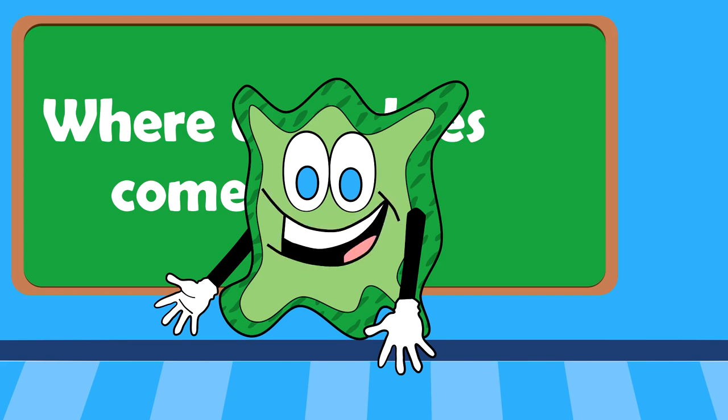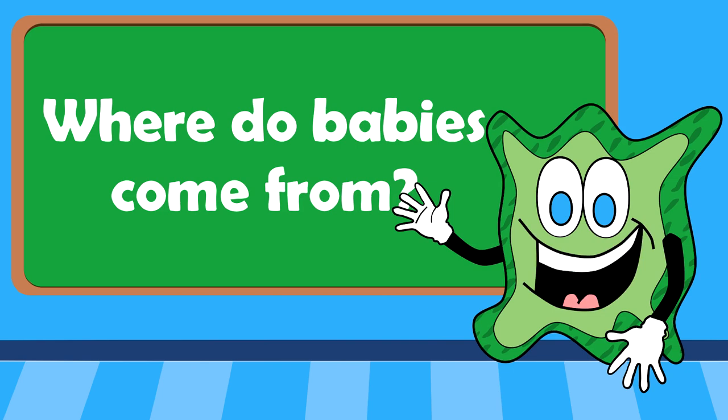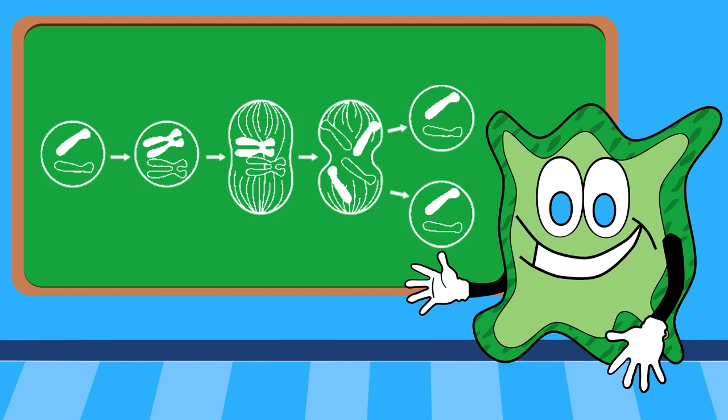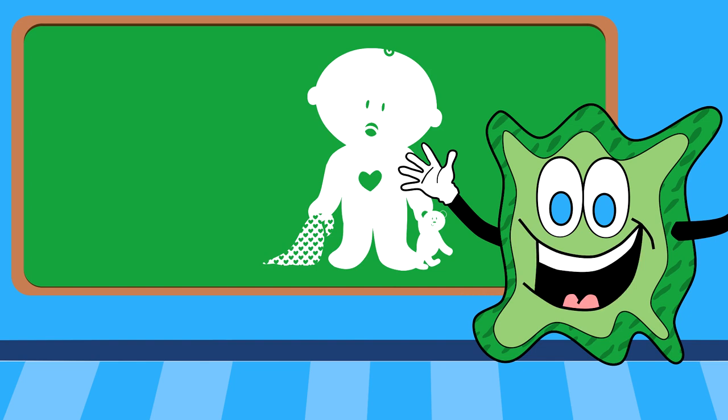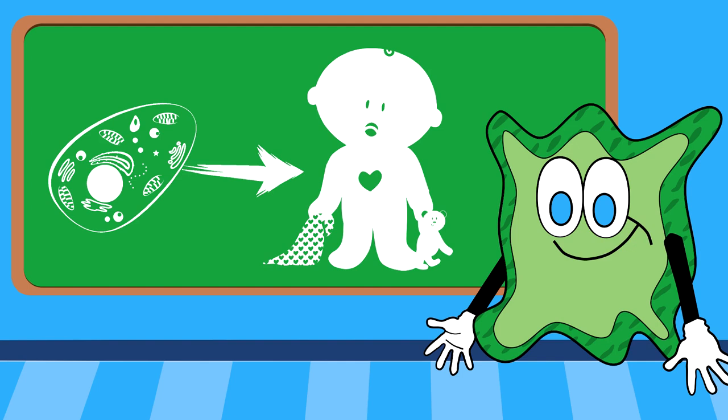At some point, we've all asked, where do babies come from? Your parents may have sat you down to have a little talk about the birds and the bees, and your schoolteachers might have explained the concepts of cell division, meiosis, and childbirth. However, this still begs the question: what happens in between? How did we get from one cell to the billions of cells that make up each of us? How did our organ systems form?